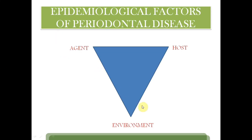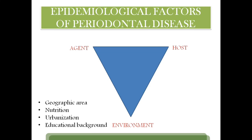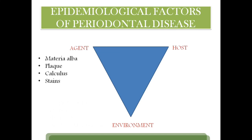We have this epidemiological triad, just like what we've seen in dental caries. We have agent factors, host factors, and environment factors. Host factors include race, age, sex, individual variations, habits, occupational habits, presence of concomitant diseases, and other habits. Environmental factors are geographic area, urbanization, and educational background. Agent factors include material alba, dental plaque, calculus, and stains.